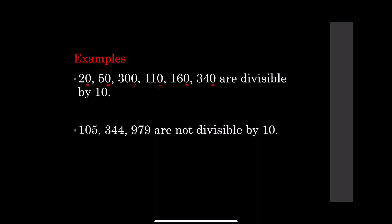On the other hand, numbers like 105, 344, 979 are not divisible by 10. Why? The first number 105 ends with 5. 344 ends with 4, not 0. 979 ends with 9, not 0. So they are not divisible by 10.